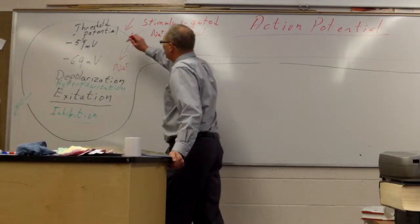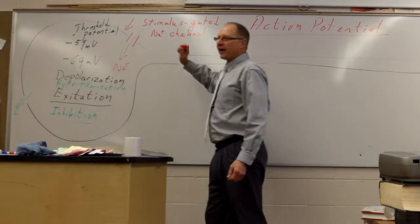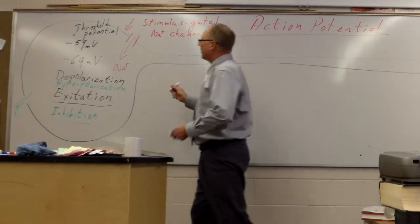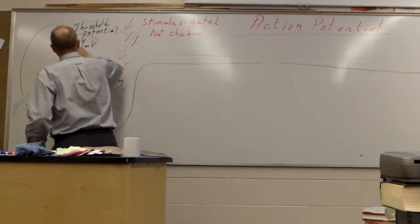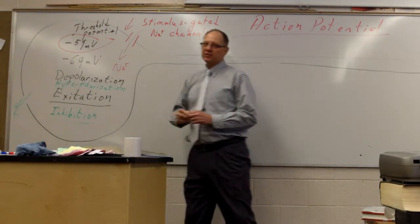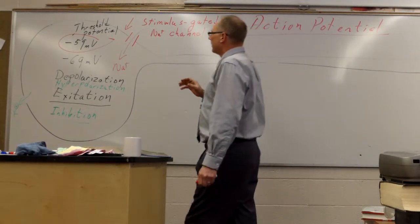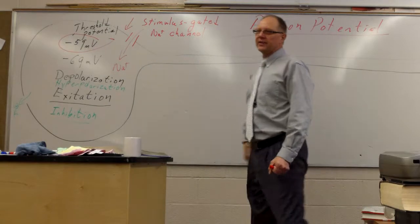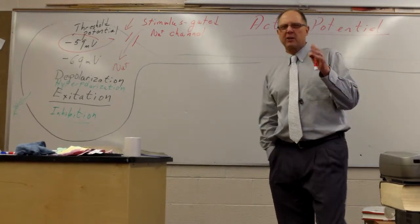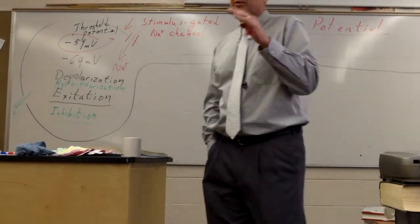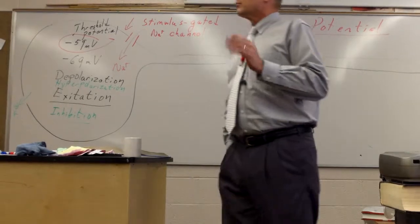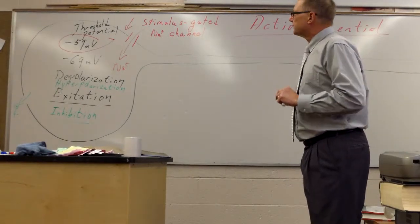So what we have here is a local potential. And an action potential will occur only when the threshold is reached. That's number one. If the local potential reaches negative 59 millivolts. By the way these numbers are approximate. Some cells are a little bit different. But mostly this is an accurate number.